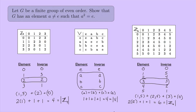The basic idea is: if you pair the elements up with their inverses and count up the pairs, we'll have an even number of elements in the pairs, plus the things that are paired with themselves, and that gives us the order of the group. I think we're ready for a proof.